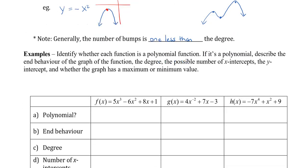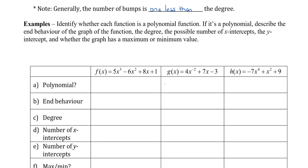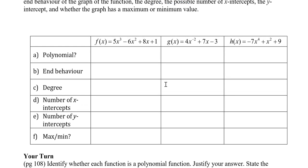As a little practice, we're going to identify whether each function is a polynomial. If it is a polynomial, we'll describe the end behavior, indicate the degree, the possible number of x-intercepts, the y-intercept, and whether the graph has a max or min. It's always great to draw a mini graph, even if it's not perfect, just to visualize what the graph looks like.